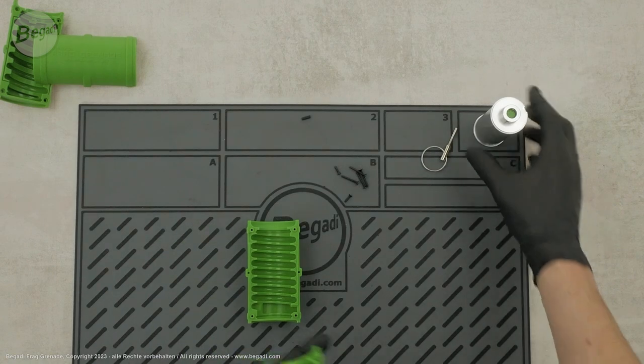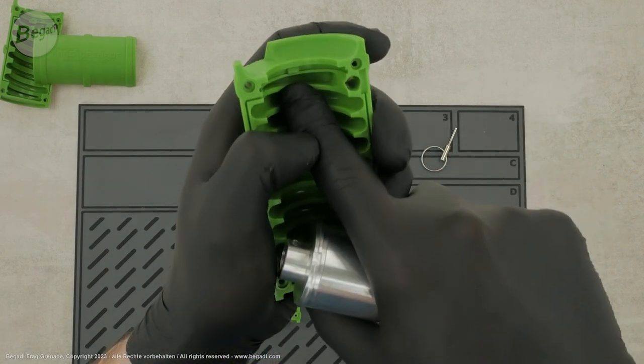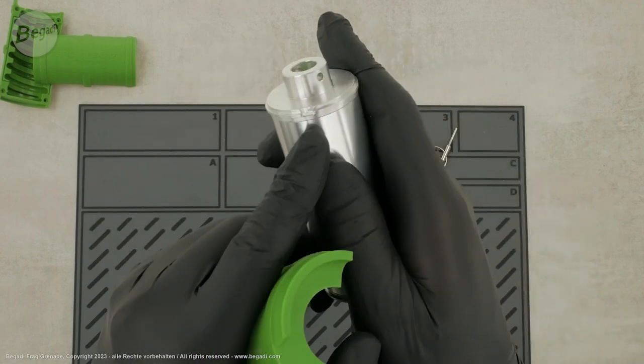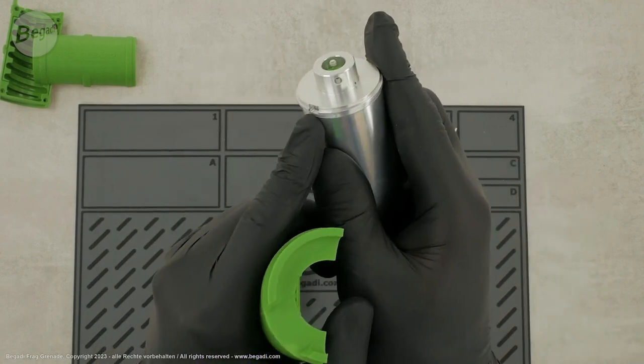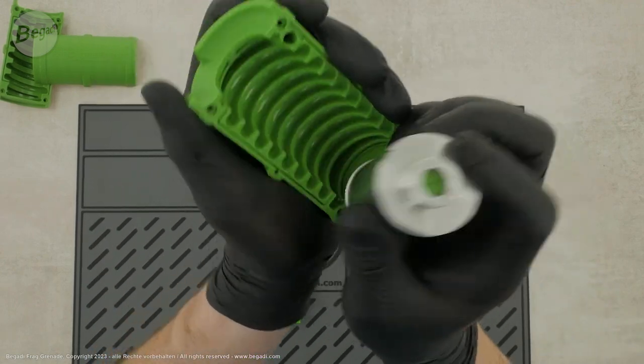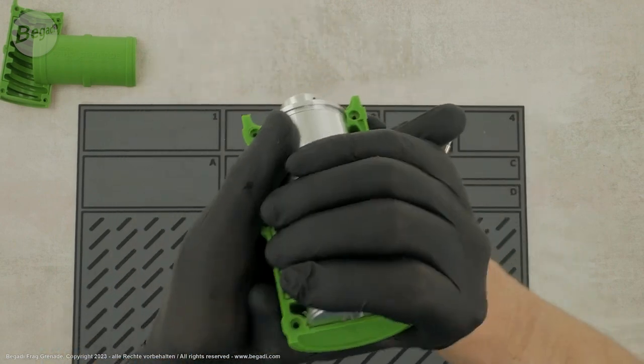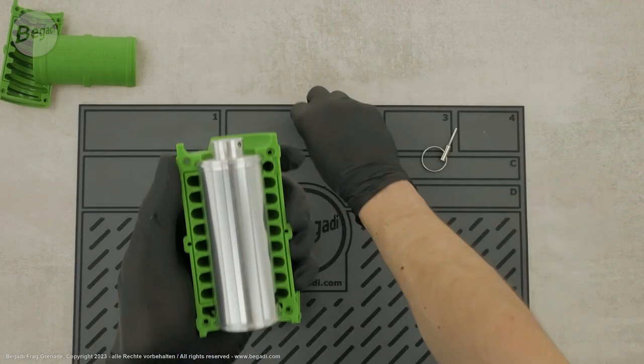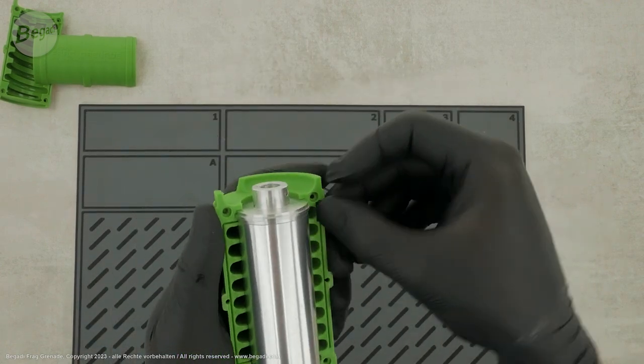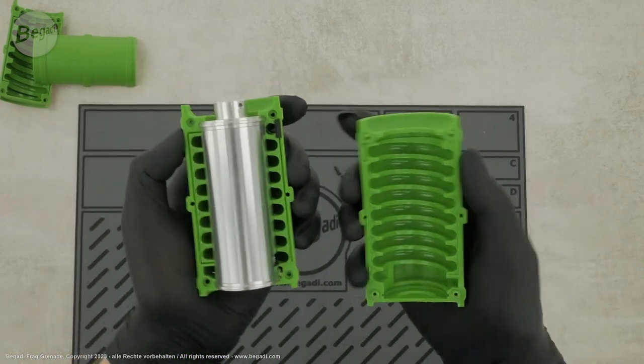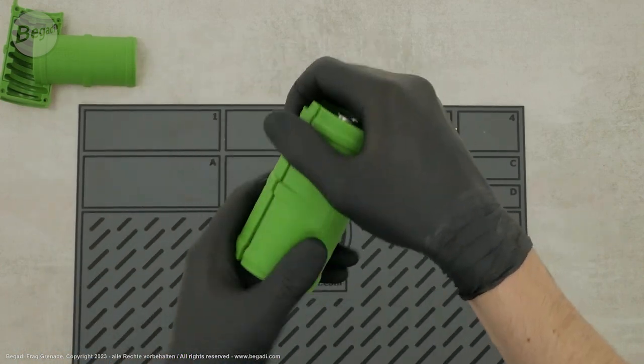For proper assembly of the shell segments, the pressure container has a notch that prevents twisting during reassembly. Make sure they fit together correctly. Place the rubber tensioner in the designated notch. Now, you can place the remaining shell segment and press it firmly together.